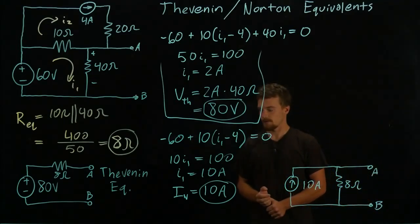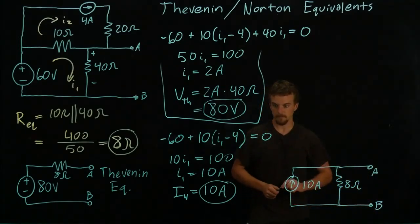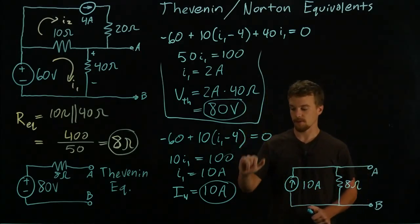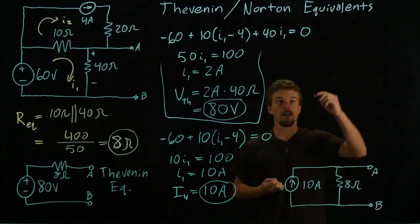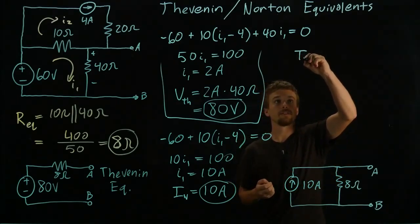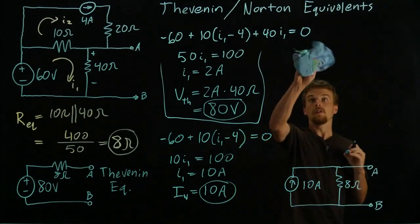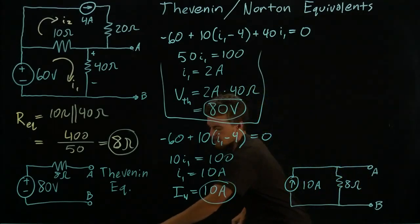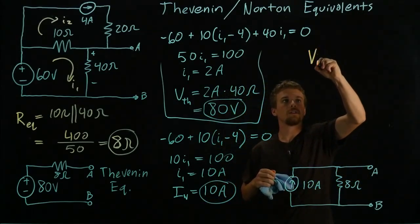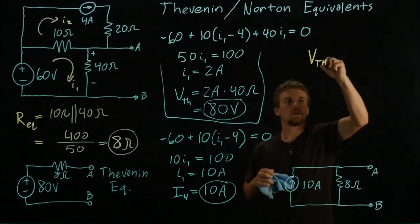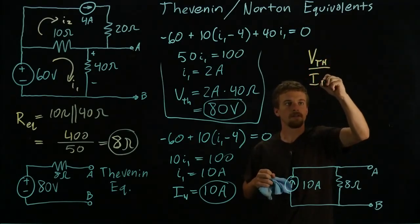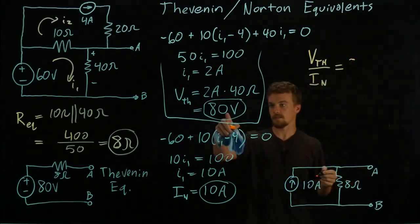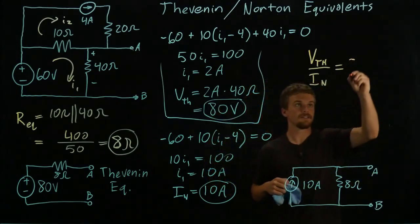So something interesting we'll find is that if we look at the values we came up with for our Thevenin voltage and Norton current, we'll see that our V_Thevenin over our I_Norton is equal to, let's see, 80 over 10 is equal to 8.